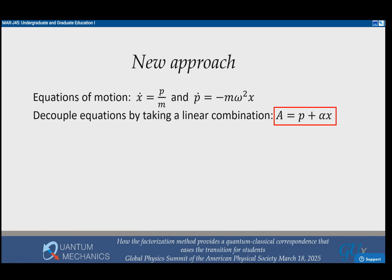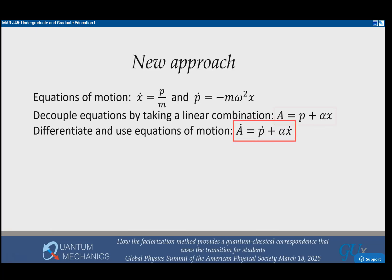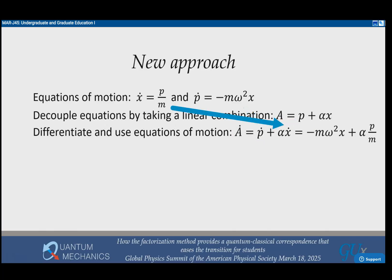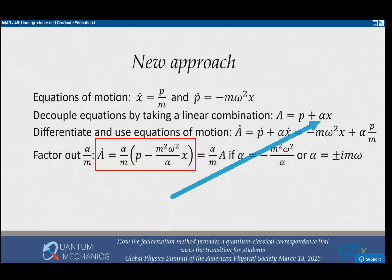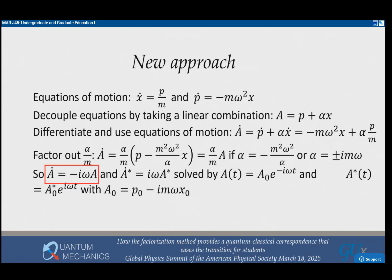You do it by taking a linear combination. We're going to call it A is P plus alpha X. Then we take the derivative, substitute in what P dot was and what X dot was. Because we want it to be proportional to A so it's decoupled, I factor out the coefficient alpha over M. For this to equal A, this coefficient has to equal alpha. So we set them equal, and you find that alpha is pure imaginary, plus or minus i M omega. When I plug into that differential equation, I get this simple result: A dot equals minus i omega A.